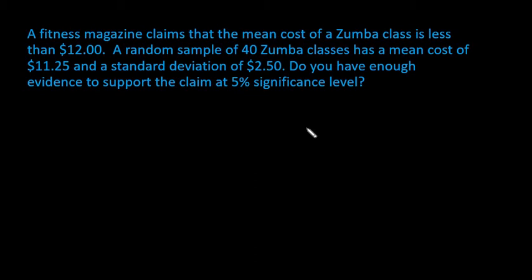Hi! For this video, what we're going to do is use the TI Inspire to help us find a p-value to make a conclusion about this specific situation. What we have is a fitness magazine claims that the mean cost of a Zumba class is less than $12. A random sample of 40 Zumba classes has a mean cost of $11.25 and a standard deviation of $2.50. Do you have enough evidence to support the claim at a 5% significance level? This could also say, do you have enough evidence to support the claim at alpha equals 0.05.